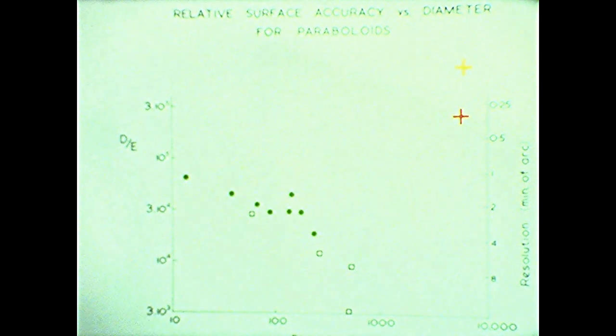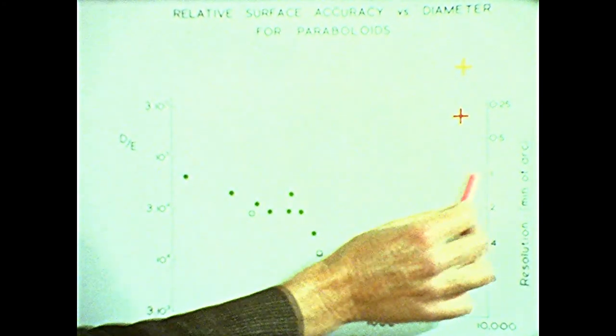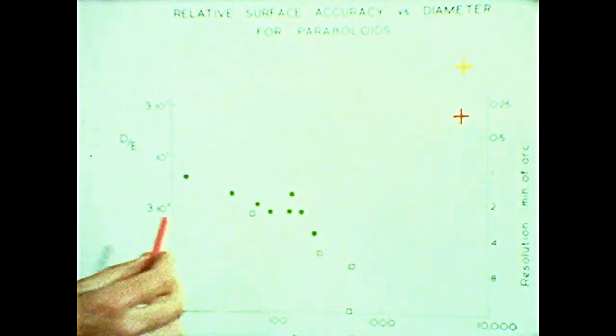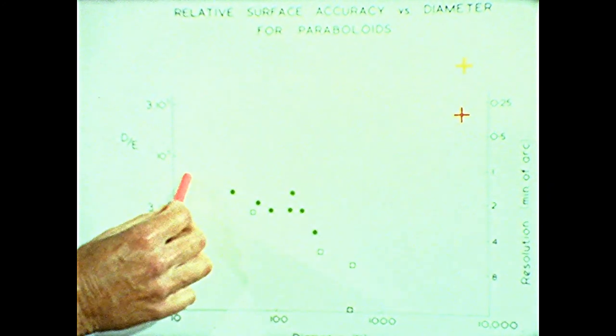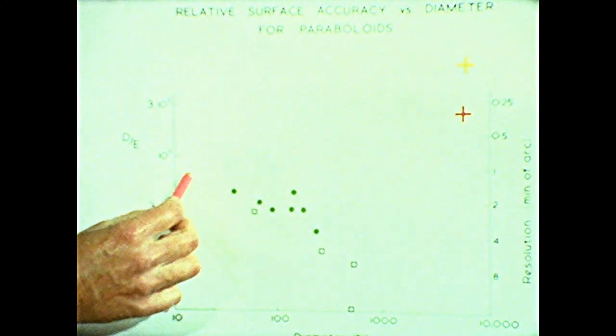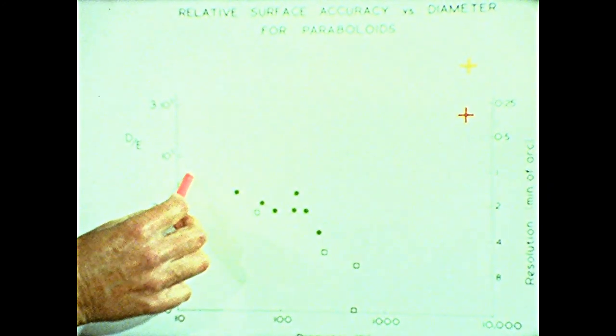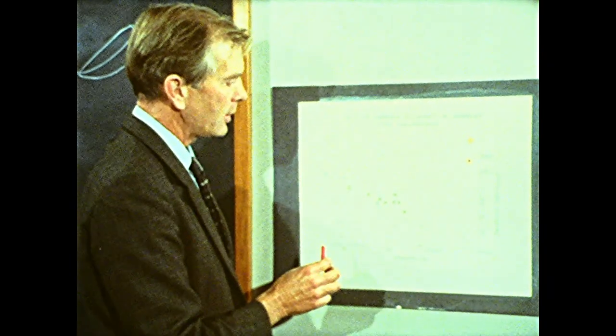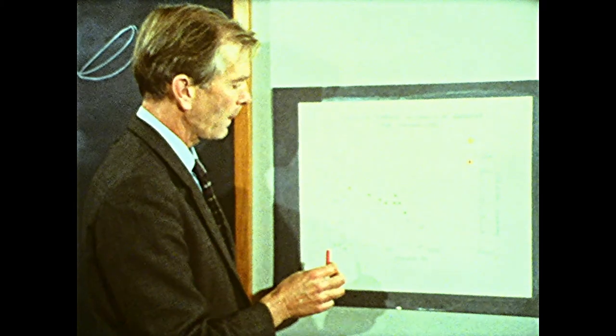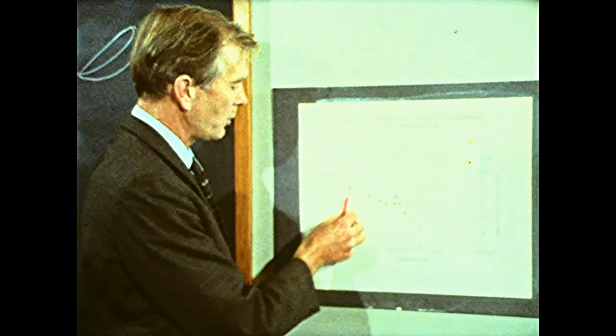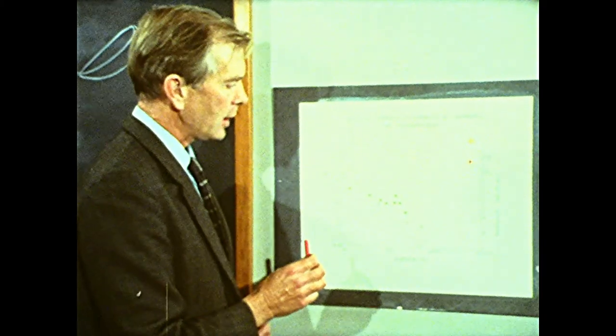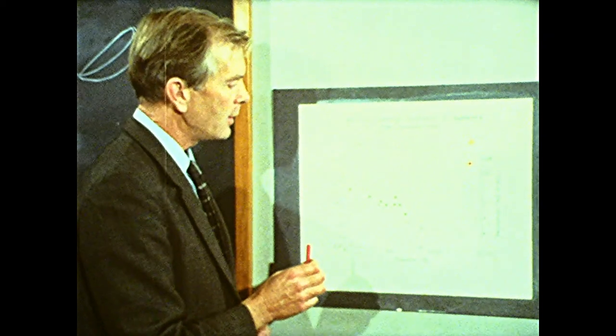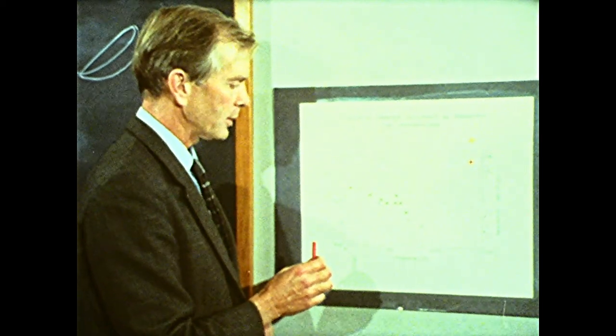Now, the resolution of the human eye is about 1 minute of arc here. And so we see that for this small dish, which is in fact a 5 meter diameter dish at the University of Texas, we are getting a resolution about the same as that of the human eye. But unfortunately, for such a small instrument, the collecting power is so small that many of the most important problems cannot be tackled.